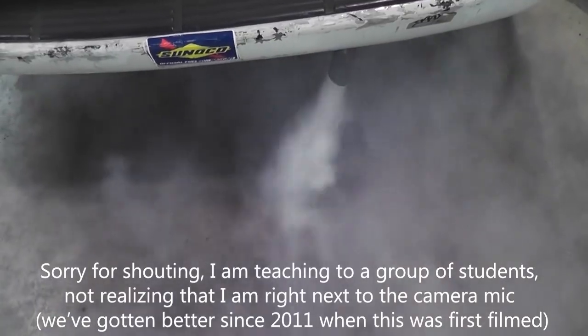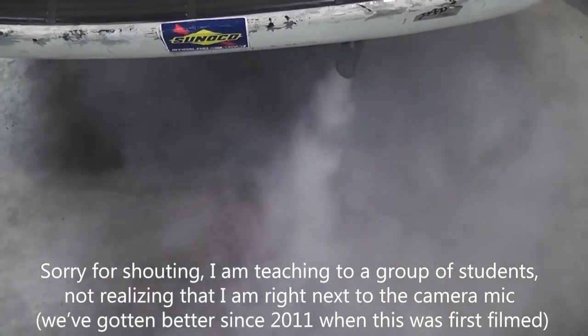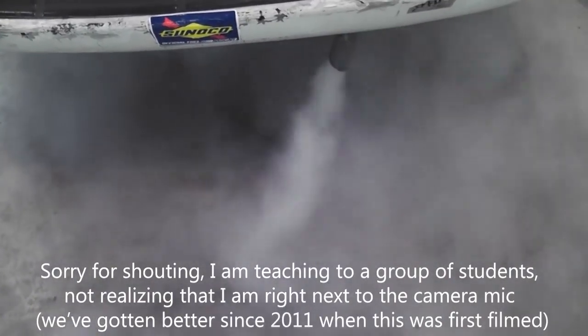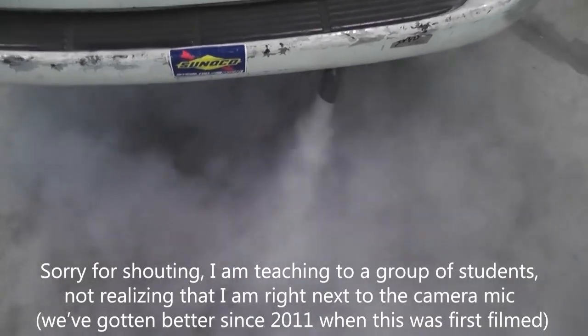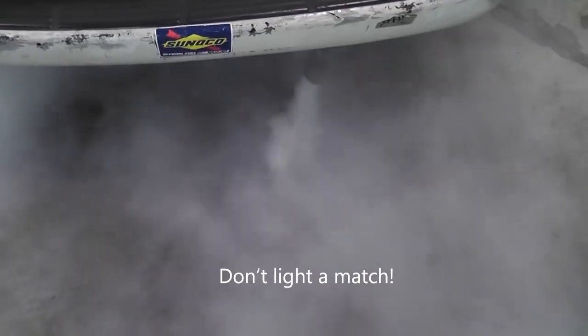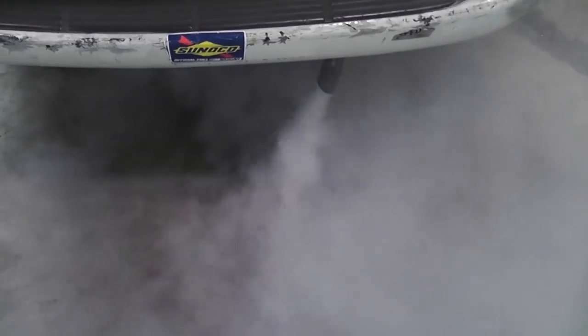White smoke, what everybody says would be a bad head gasket. This has a number five injector that is stuck open. This is what raw fuel looks like coming out of the tailpipe. Go ahead, let it idle. You can't mistake white smoke. White smoke does not always mean head gasket. This is raw fuel from a stuck open number five injector.